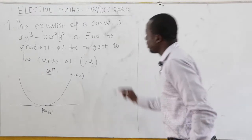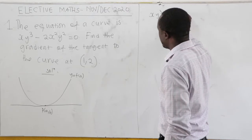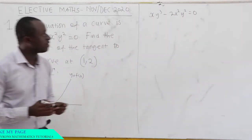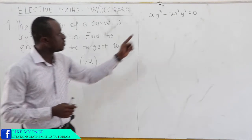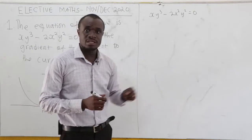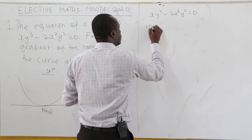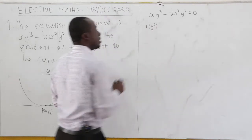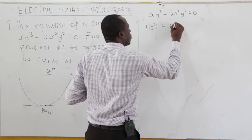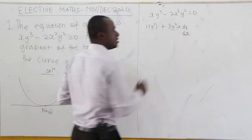Hence, with the equation given to us: xy cube minus 2x square y square root equals 0. Now let's find the gradient, that is dy/dx, using the product rule. This is implicit differentiation. When you differentiate x, we get 1 and keep y cube, plus when you differentiate y cube we get 3y square x dy/dx.